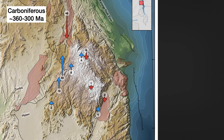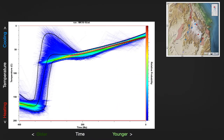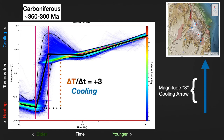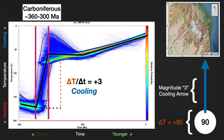For the next few slides, I'm going to show some time slice maps with cooling vectors like this one. Each point represents a time slice on thermal history models from QTQt using the fission track as well as helium data for each sample. The vector arrow indicates if a sample is cooling or heating, and the magnitude of the arrow is the slope of the change in cooling over time. The number at the base of the arrow indicates the change in temperature during this time period.